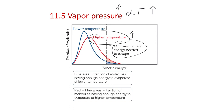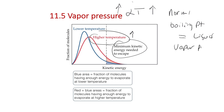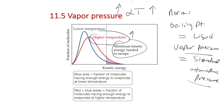At some point the liquid is going to boil — the vapor pressure is going to be high enough to boil. The normal boiling point is the point at which the liquid has a vapor pressure equal to standard atmospheric pressure of 1 atm.